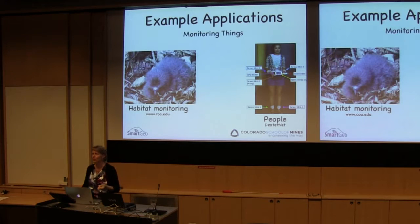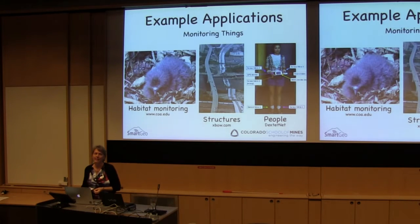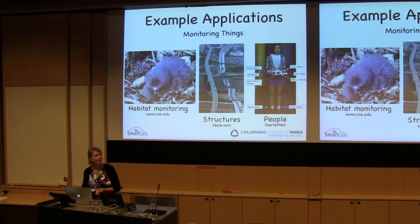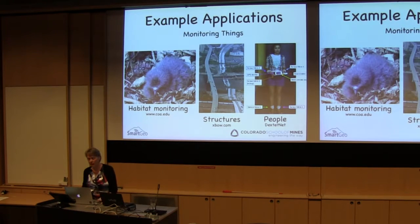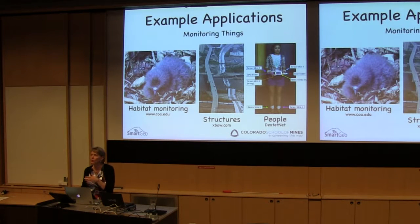You can monitor living things such as birds as well as people. There's a whole new field of research that started a few years ago on body sensor networks, and a lot more research is being done there. You can also start monitoring non-living things such as bridges. There are a couple of bridges in the United States that have been instrumented with a wireless sensor network to monitor for structural integrity, to try to avoid things like the bridge failure in Minnesota.